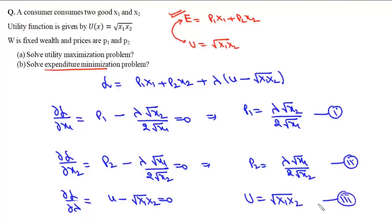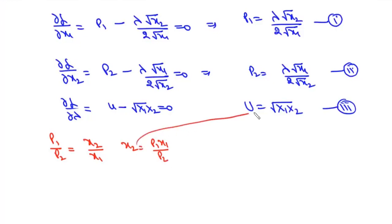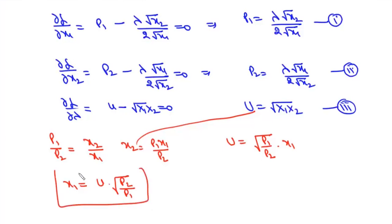From these three equations we find x1, x2, and λ. Dividing the first equation by the second gives p1/p2 = x2/x1. Writing x2 = (p1/p2)·x1 and substituting into the utility constraint u = √(x1·x2) gives x1 = u·√(p2/p1).